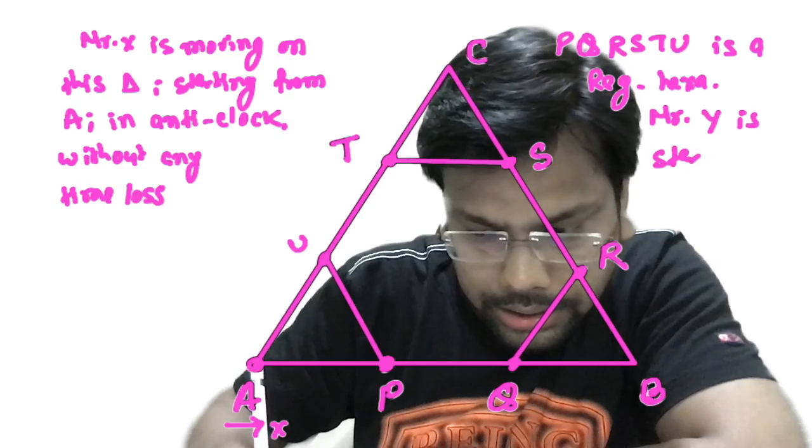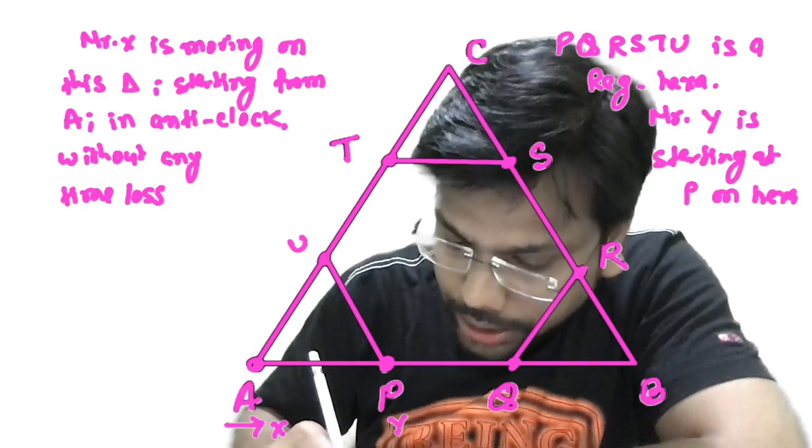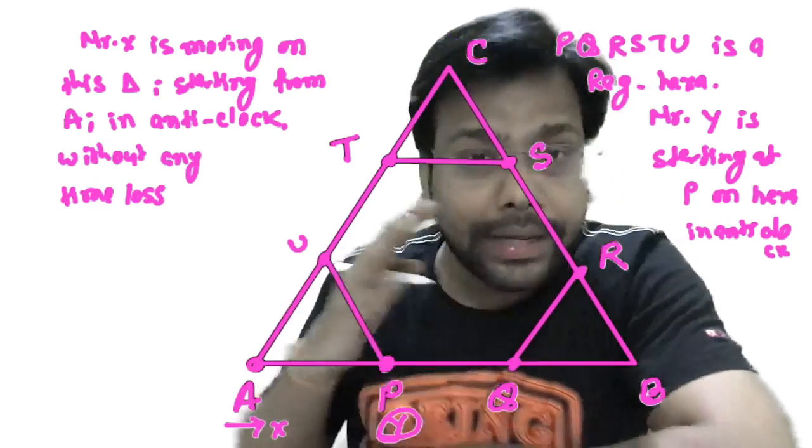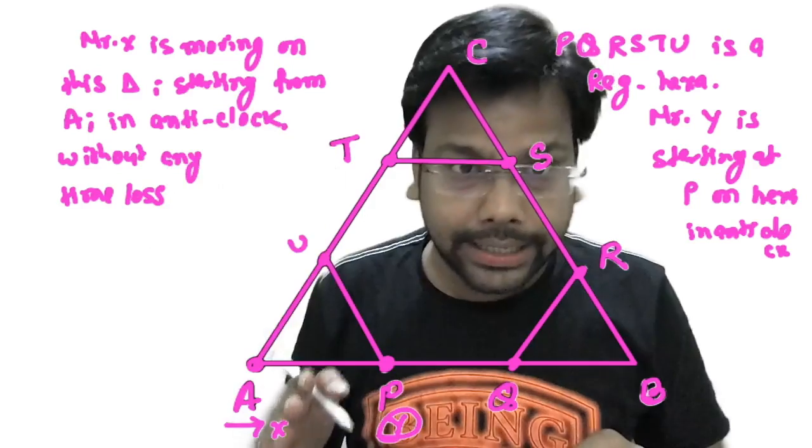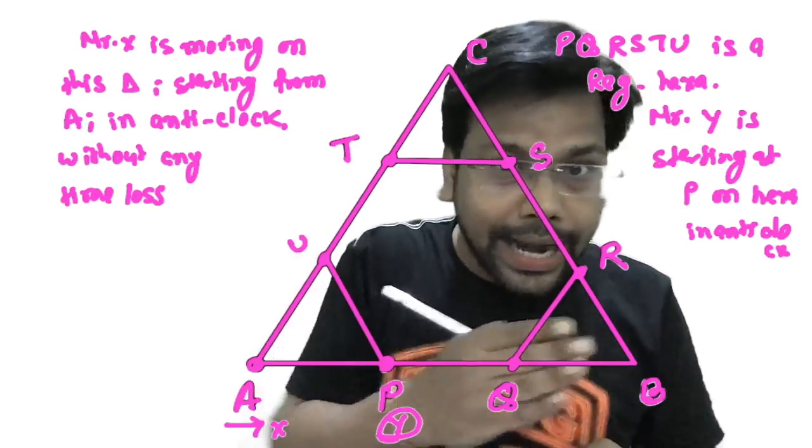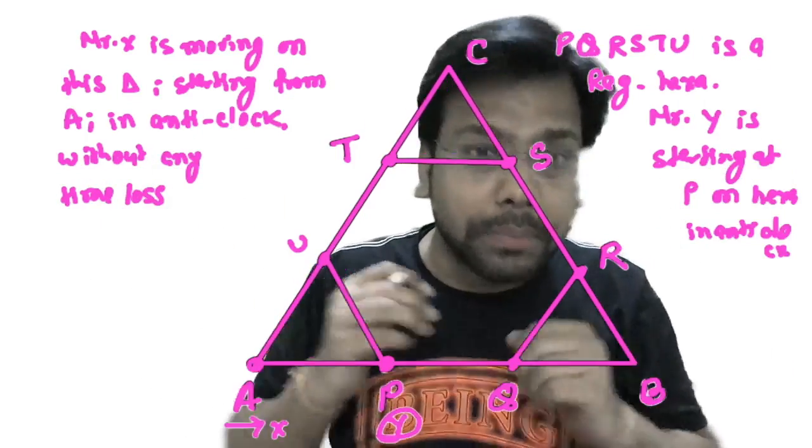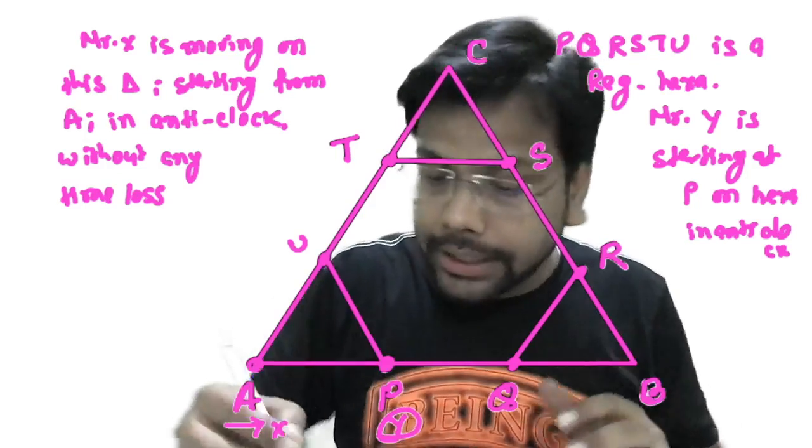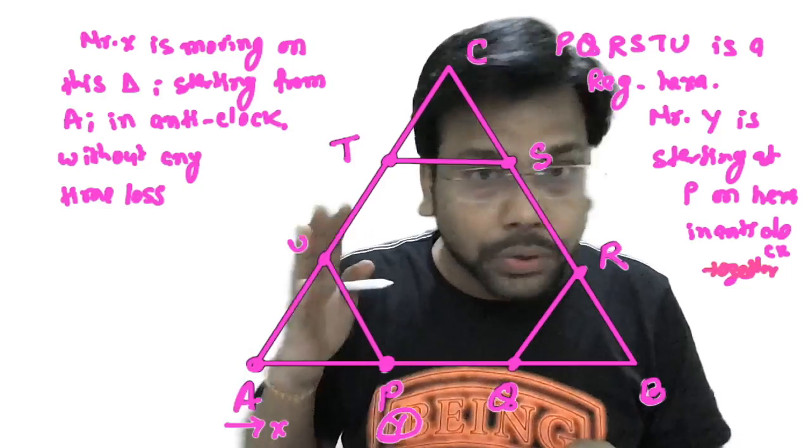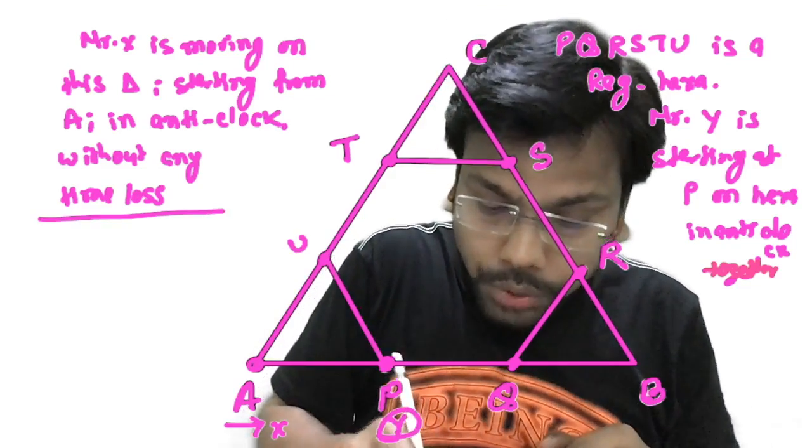Now Mr. Y is starting at P on hexagon in anti-clockwise direction. So I'm again repeating the question. Mr. X is moving on triangle ABC starting from A in the anti-clockwise direction. Mr. Y is starting at P and moving on a regular hexagon in anti-clockwise direction. We have Mr. X, Mr. Y, and they are starting from A and P together. So they are starting together. This information is important. They are starting together.